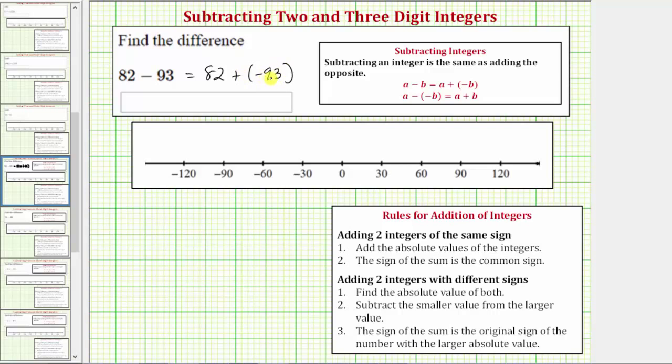Now let's find this sum which equals this difference using the formal rules for adding integers and then we'll also show the sum on the number line. So because we have a positive plus a negative, we'll be using the rules here for adding two integers with different signs.